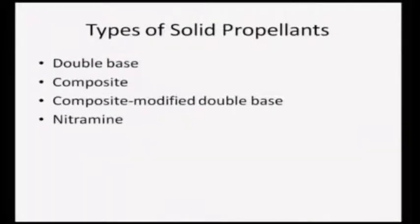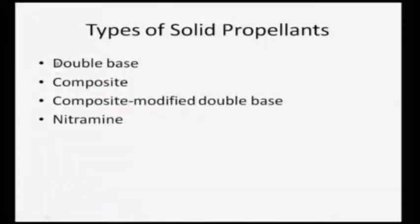Let us come to the types of solid propellants used - the propellant meaning the fuel and oxidant together. Since it is a homogeneous mixture, both the fuel and oxidizers are mixed together, so it will be a single solid piece. There are primarily 4 types of solid propellants: double base, composite propellant, composite modified double base, and nitramine propellant.